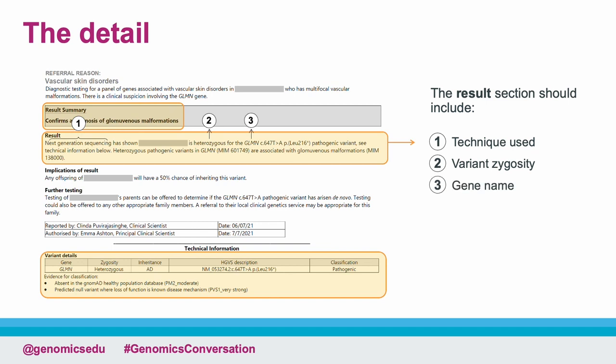3. Which gene the variant resides in — here in the glomulin or GLMN gene. 4. The variant nomenclature. Variants are described using a specific standardized language known as HGVS description. So here, at nucleotide position 647 in the glomulin gene, the thymine nucleotide has been changed to an adenine — a T to an A change. And as a result, at the protein level, a leucine amino acid at position 216 in the amino acid chain has been substituted to a stop codon, marked as an asterisk, which will cause a truncation of the protein.